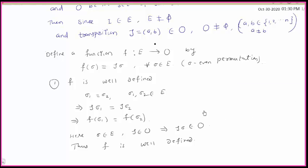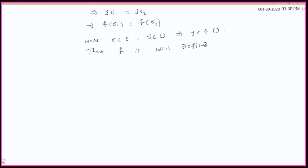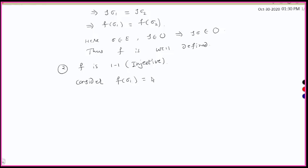Now we are going to show that this function is one-one and onto. Second, we have to show that f is one-one, that is injective. For that, consider f(σ₁) = f(σ₂) where σ₁ and σ₂ belong to E.